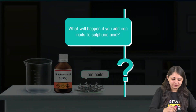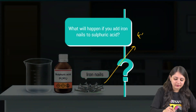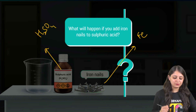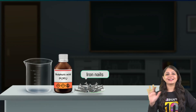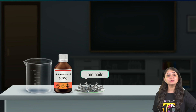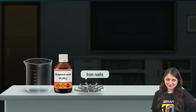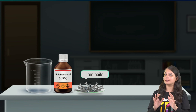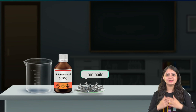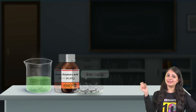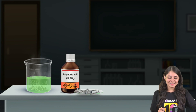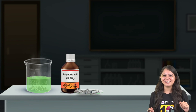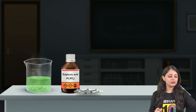You can see we have iron nails and sulfuric acid — those are our reactants. Note the color of the reactants: iron nails have a silvery-grey color and sulfuric acid is a colorless solution. When iron nails are dipped in sulfuric acid, the colors change — a chemical reaction is taking place. Let's jot down all our observations.